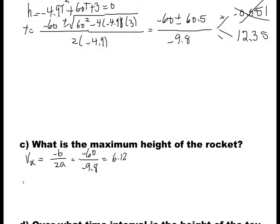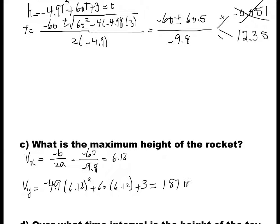To find the y-coordinate of the vertex, we evaluate the function at t equals 6.12. Substituting back into the equation: negative 4.9 times 6.12 squared plus 60 times 6.12 plus 3. If you simplify, you get 187 meters. So the rocket reaches a maximum height of 187 meters at 6.12 seconds.